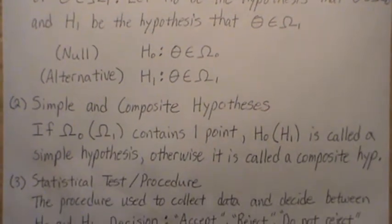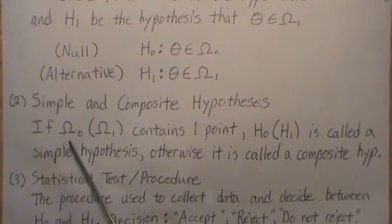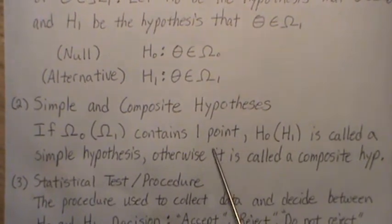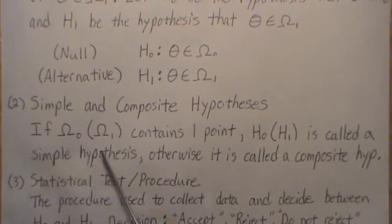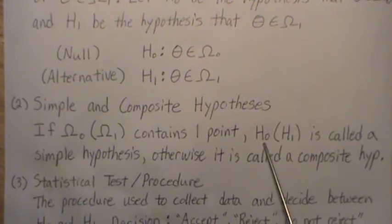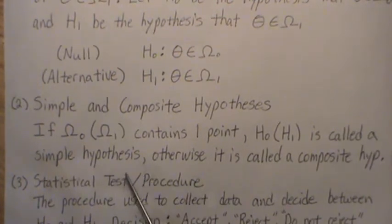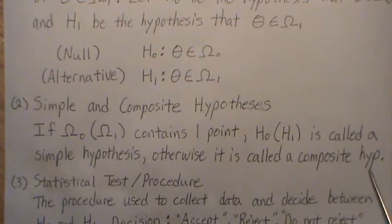Now we have what's called simple and composite hypotheses. If omega naught contains one point, then H naught is called a simple hypothesis because it deals with one point. Otherwise it's called a composite hypothesis.